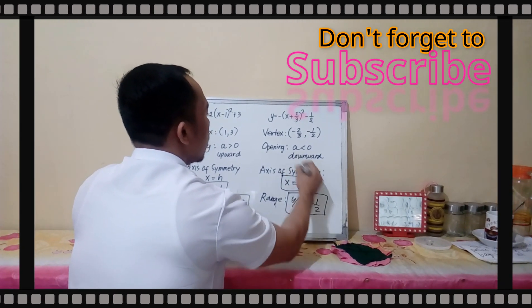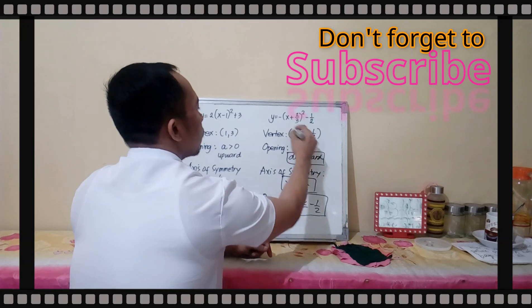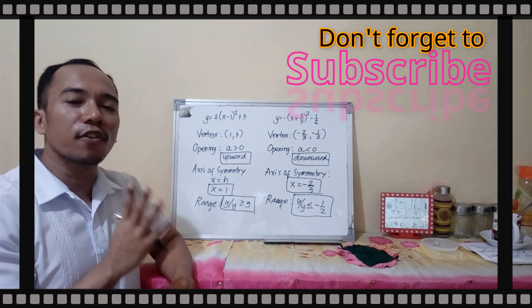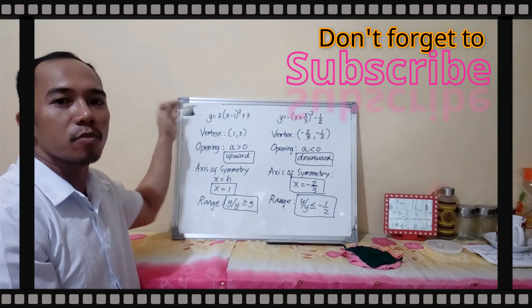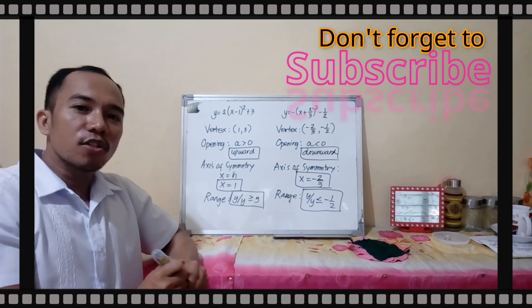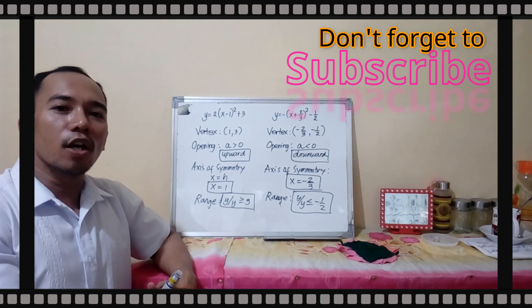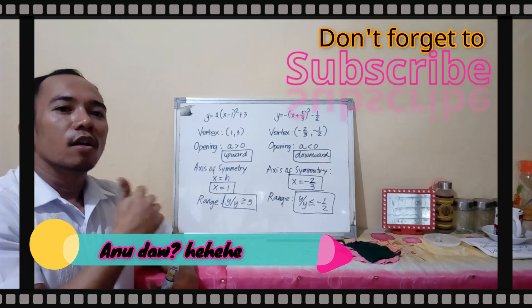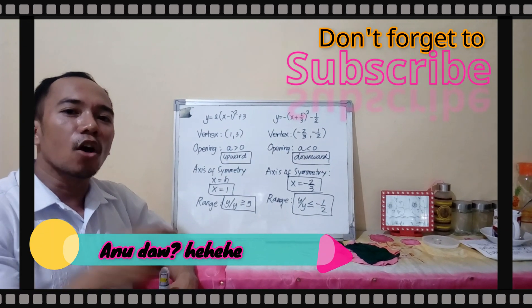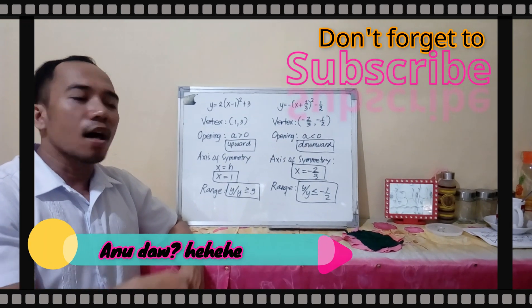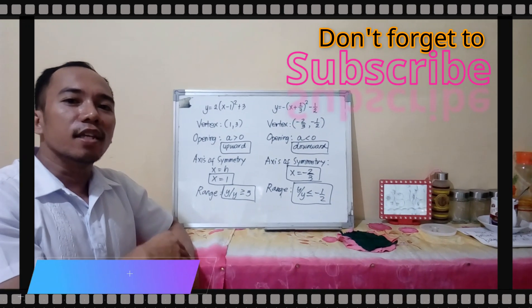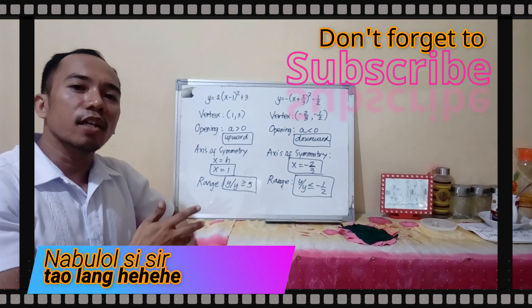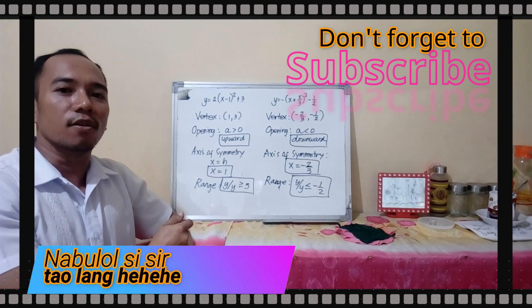These are the things that we can get from the vertex form. We can get 4 different concepts from the vertex form. Vertex form is very important. You should know how to transform quadratic function into its vertex form. Since you learned a lot, comment below your learnings about this video. I will check all the comments. Don't forget to subscribe and like the video. Thank you.